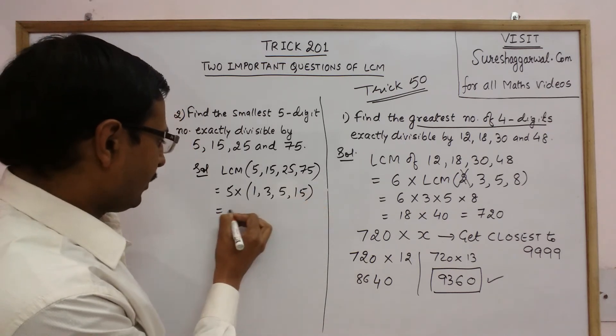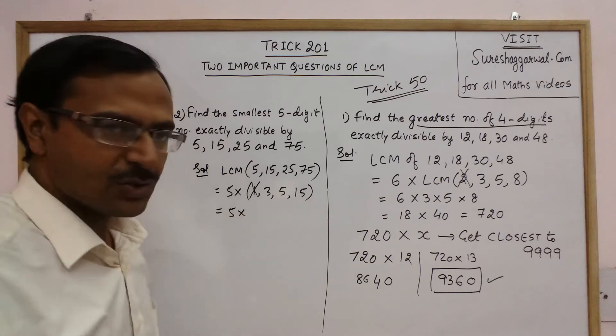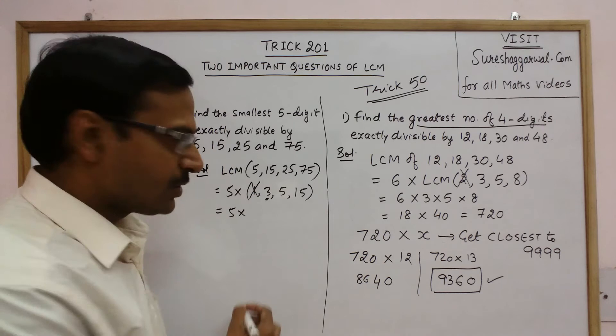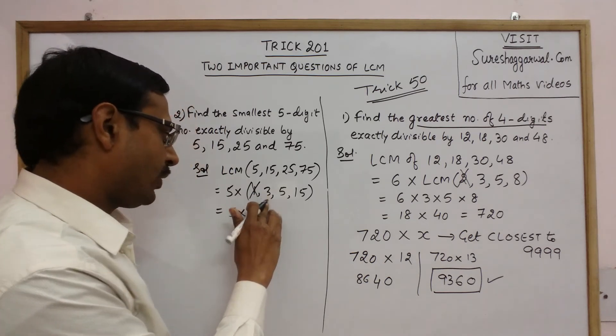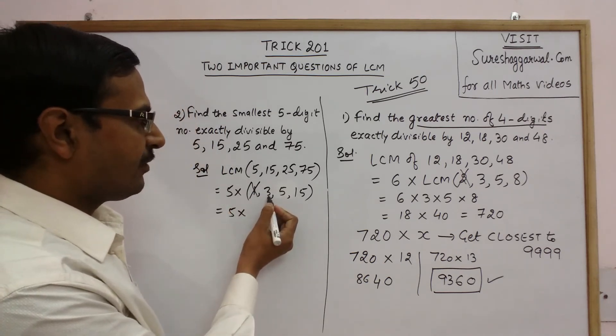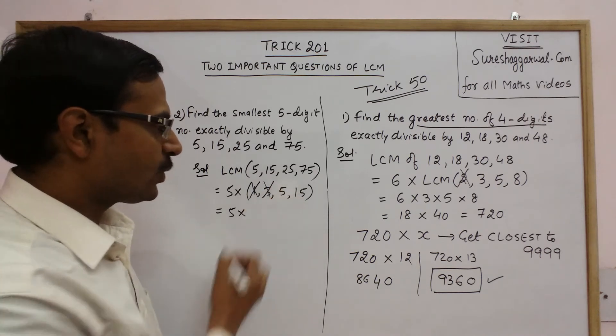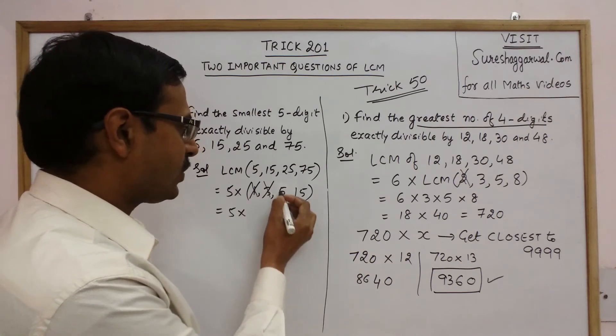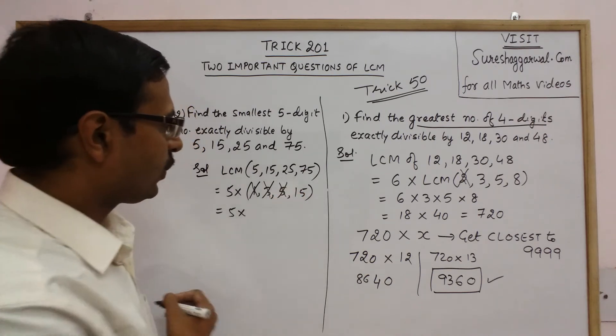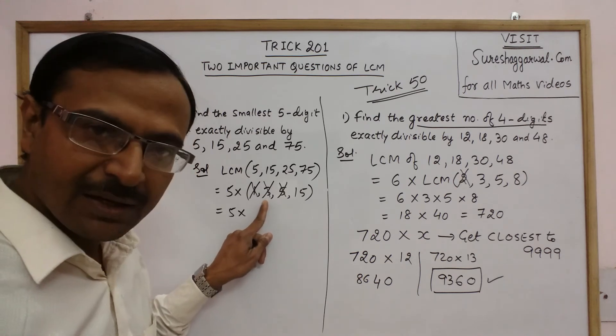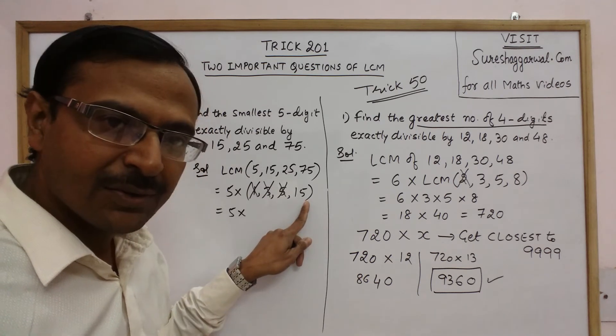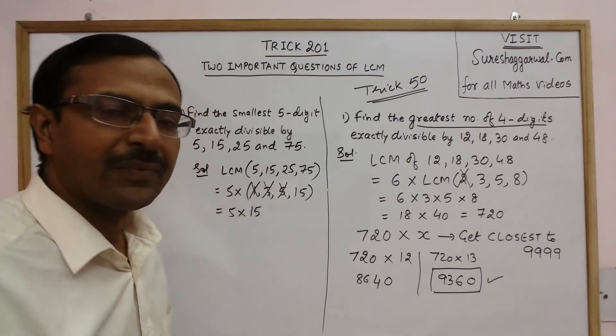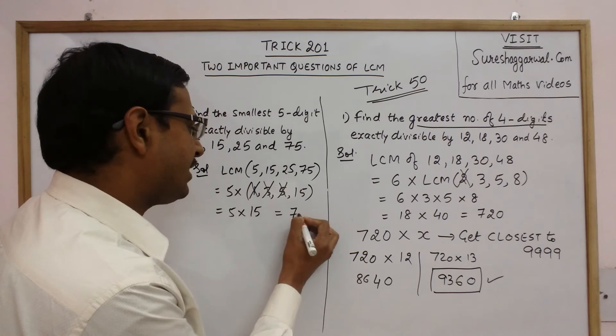Now out of this 1 assumes no importance. 3 is a prime number. So either what you can do is 3 is a factor of 15 so just cancel this out. 5 again it is a factor of 15 so you can cancel this out. Or you can treat it like this, say 5 into 3 is 15 and this is also 15. So actually we have two 15s here so only one 15 will come in the LCM. So your LCM is 75.